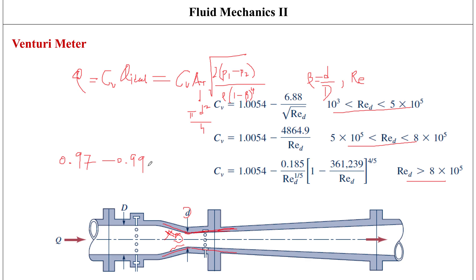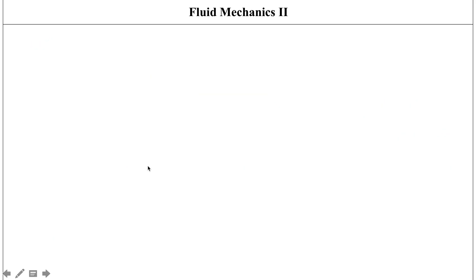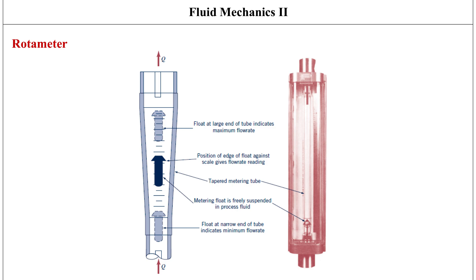Those are the three obstruction-type flow meters. There are a variety of other devices that can measure flow rates in pipes, but they use principles other than the high-speed low-pressure concept we just saw in orifice, nozzle, and venturi meters.